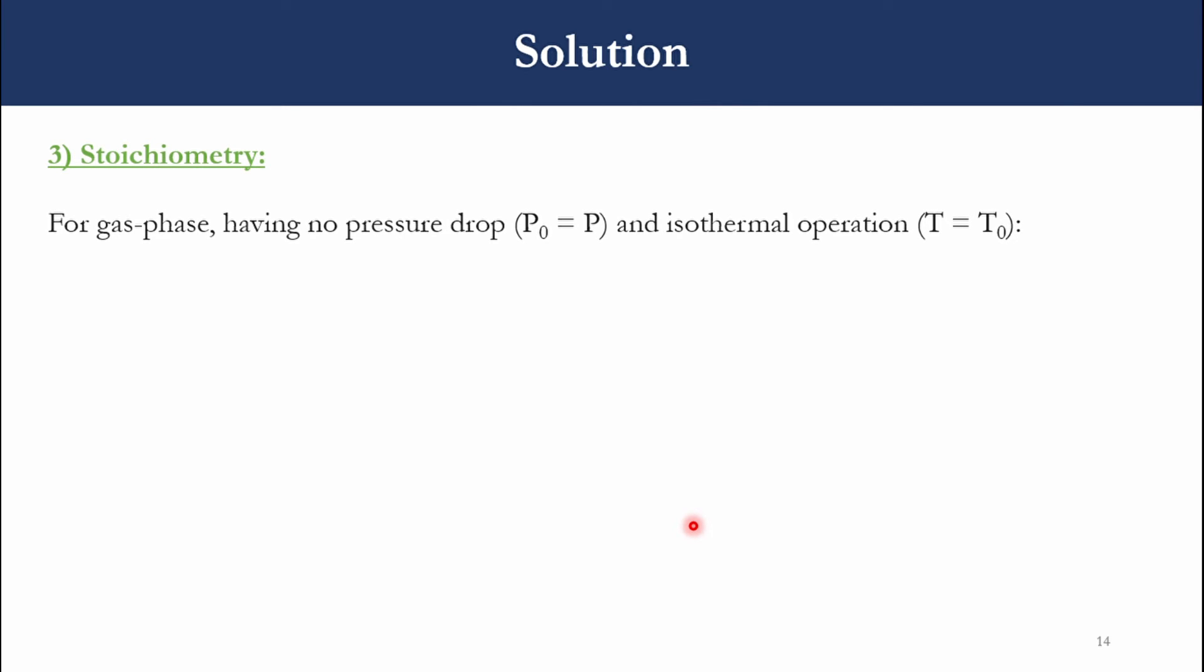Then applying the stoichiometry concept, we say that for gas phase having no pressure drop and assuming isothermal system, V equals V0 times P0 over P times T over T0 times FT over FT0. This is the total equation. If you remember, we had V0 times 1 plus epsilon X in chapter number 5. But now since this chapter is in terms of moles and molar flow rate, we will be using the flow rate terms. Since T over T0 and P over P0 are gone, we are left with V equals V0 FT over FT0. This V is the volumetric flow rate at the exit of the reactor, at the inlet of the reactor, the total flow rate at the outlet and at the inlet.